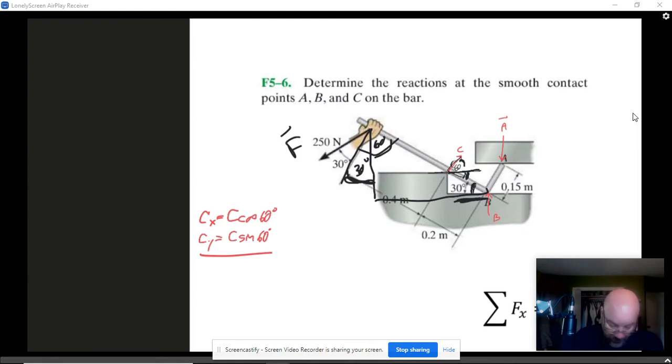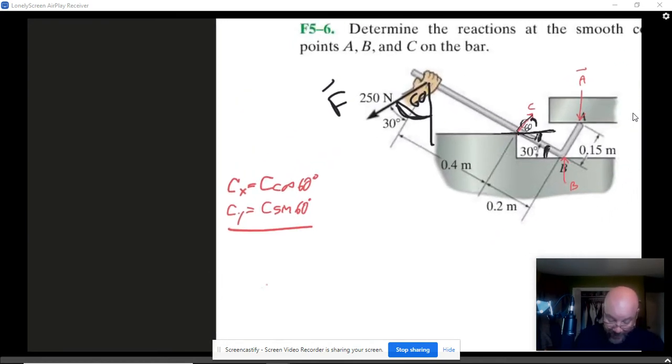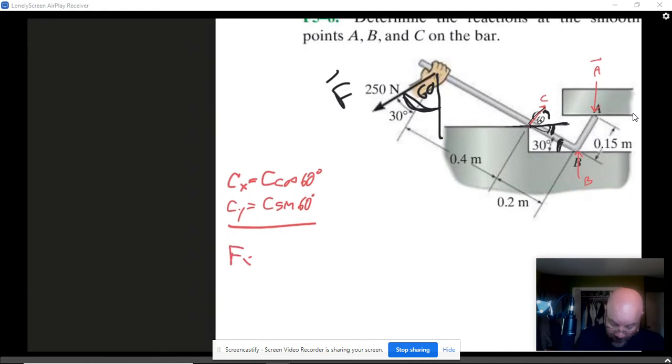Let me get rid of some of this stuff because that has gotten messy in a hurry. Let me simplify what I just tried to derive for you, which is this angle here is 60 degrees. What that does for us then is it tells us that FX is going to be negative 250 sine 60 degrees, and FY is going to be negative 250 cosine 60 degrees, just like that.